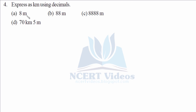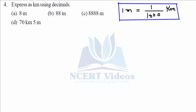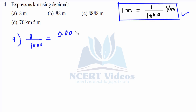Now meters into kilometers. The conversion factor is 1 meter equals 1 over 1000 kilometers. Keeping this in mind, for part a, 8 over 1000 kilometers gives you 0.008 kilometers. Always write units.